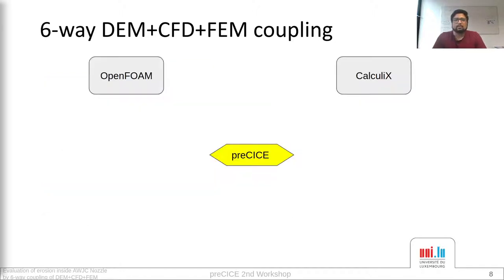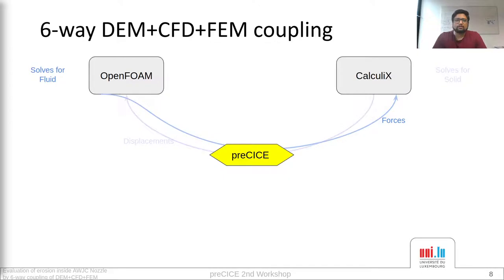In the default PreCICE FSI 2-way tutorial, we have an exchange of forces coming from OpenFOAM — which is pressure over the area — which Calculix uses as a boundary condition and solves for displacement. Calculix then sends back the displacement to OpenFOAM, and this way we achieve 2-way coupling.